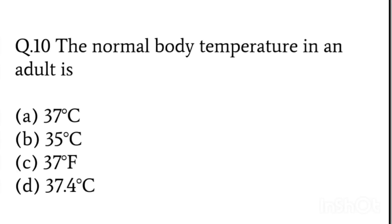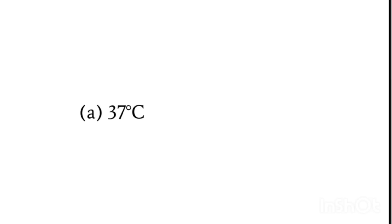The normal body temperature in an adult: 37 degree Celsius, 35 degree Celsius, 37 degree Fahrenheit, or 37.4 degree Celsius. These are very confusing terminologies. The answer is 37 degrees Celsius.